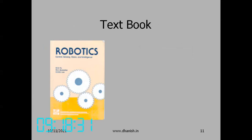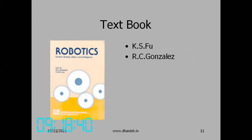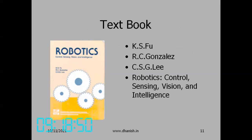This is the textbook I follow: Fu, Gonzales, and Lee — Robotics, which covers control, sensing, vision, and intelligence. There are two chapters in this book on vision alone, and my presentation is mainly based on that. Of course, this is an older book, so there have been a lot of developments and I have updated some chapters — especially the hardware part, with some additional material. Chapter 7 will be the condensed section I follow. This semester we have missed the last one or two classes required to complete it fully. See you next time.